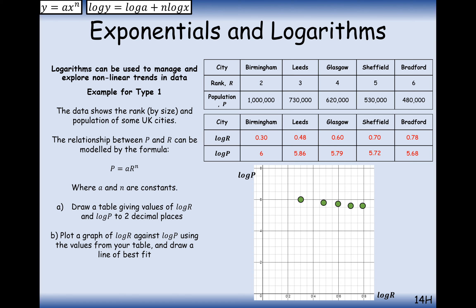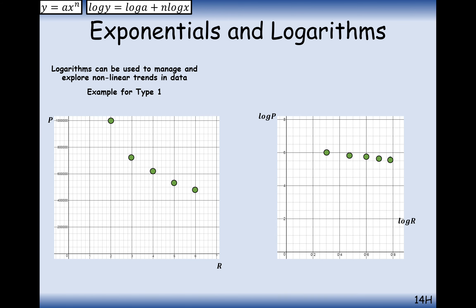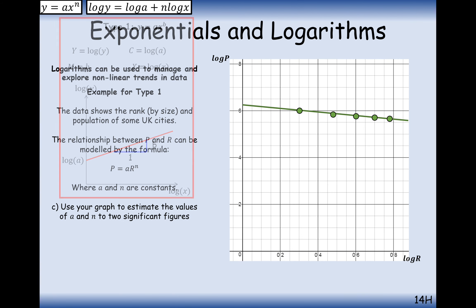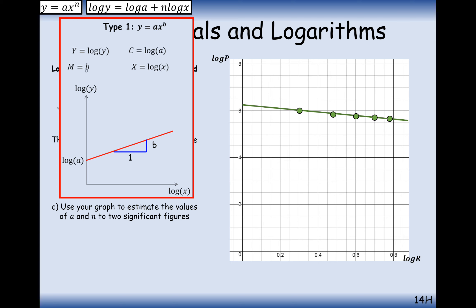Using this line of best fit, we can estimate the values of A and n. These are exactly the same data points, just on a different scale. We join these points and create a line of best fit, then look at what the equation tells us. Remember it's a type 1 equation: the point where it cuts the log y-axis is effectively equal to log A, and the gradient is equal to the value b. We can now work out these values using the line of best fit, which is what part c asks: estimate the values of A and b to two significant figures.